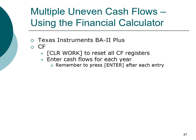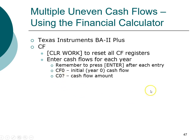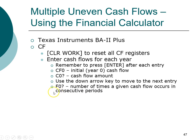Enter the cash flow for each year. CF0 stands for cash flow in year zero. Future years are labeled C01, C02, C03, etc. The 'F' register stands for frequency — how many times you receive the same cash flow amount. If you receive the same amount more than once, you can use this register. We will demonstrate that through an example.